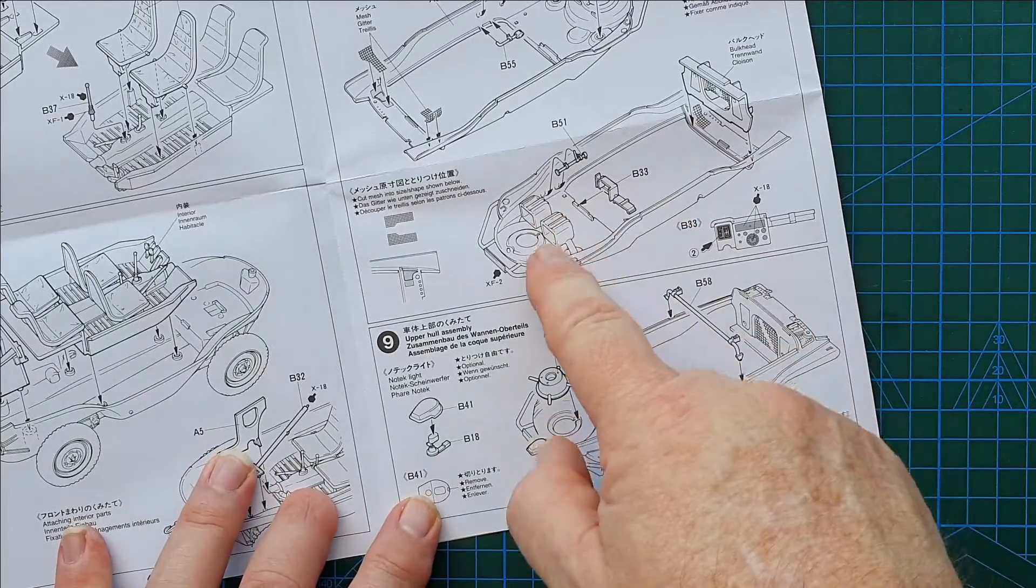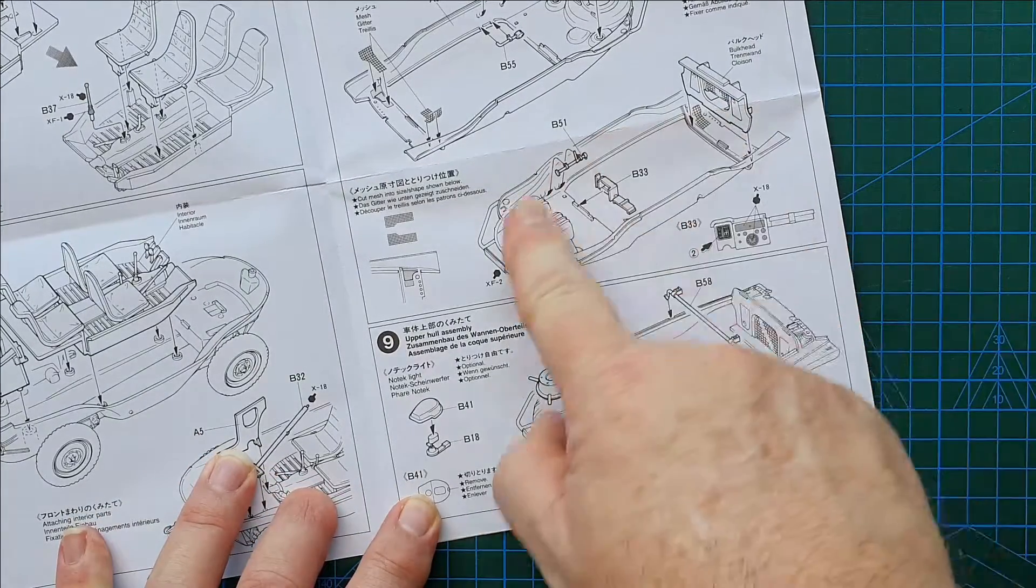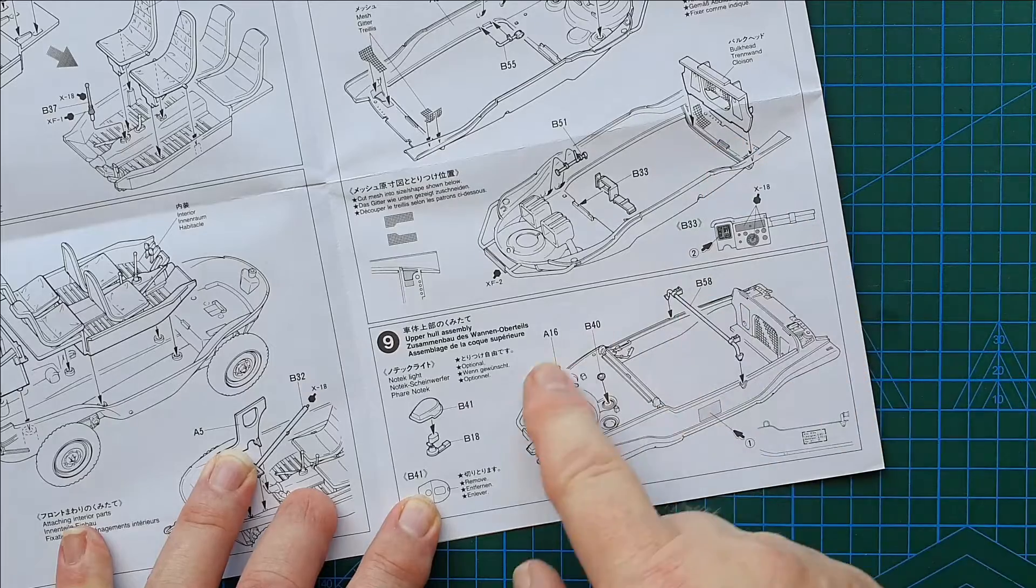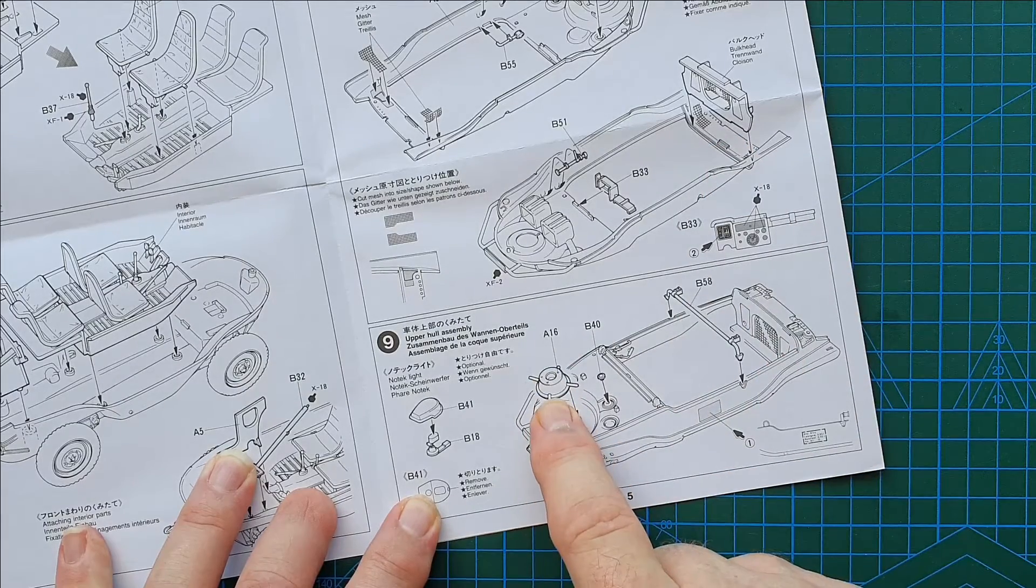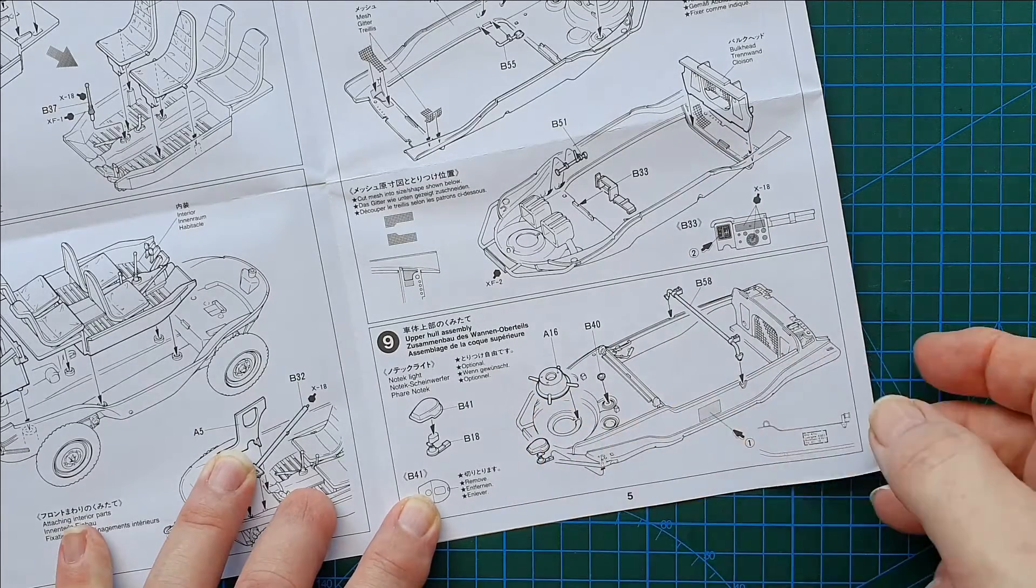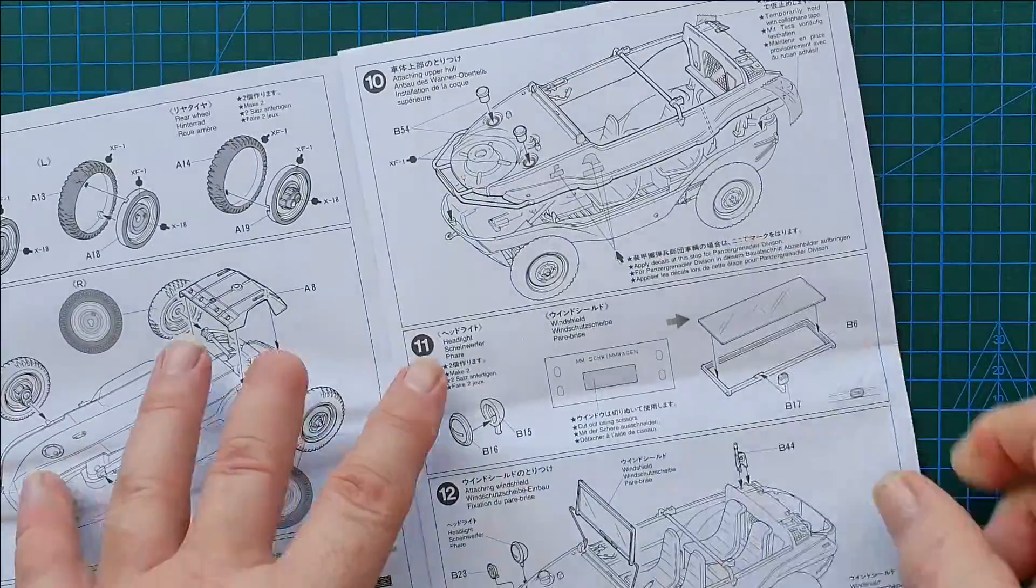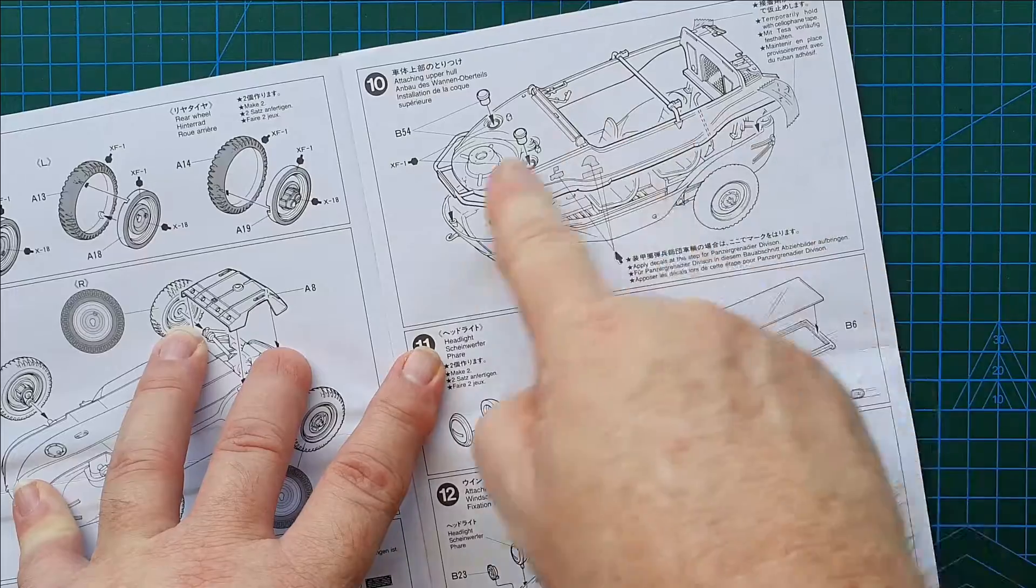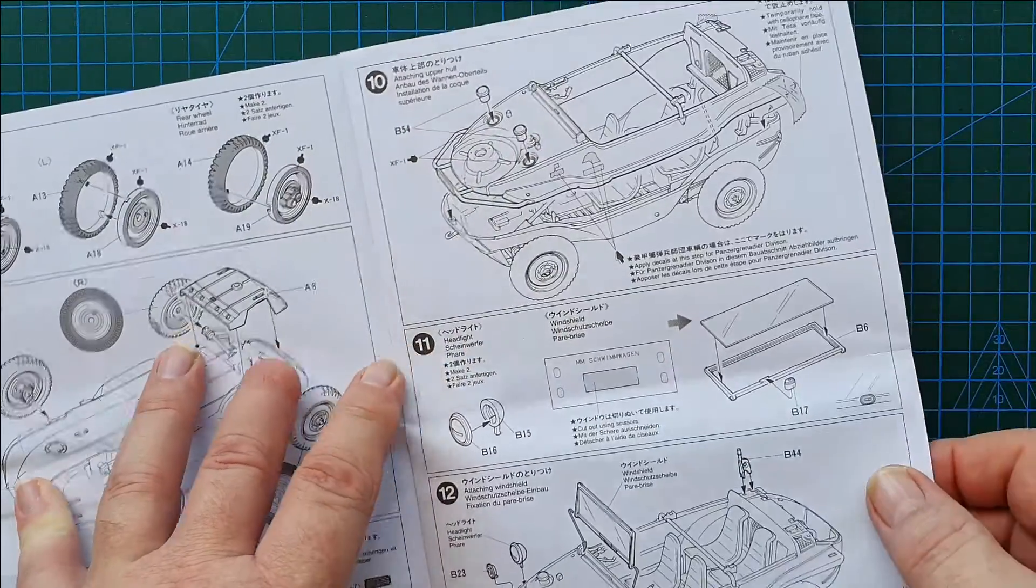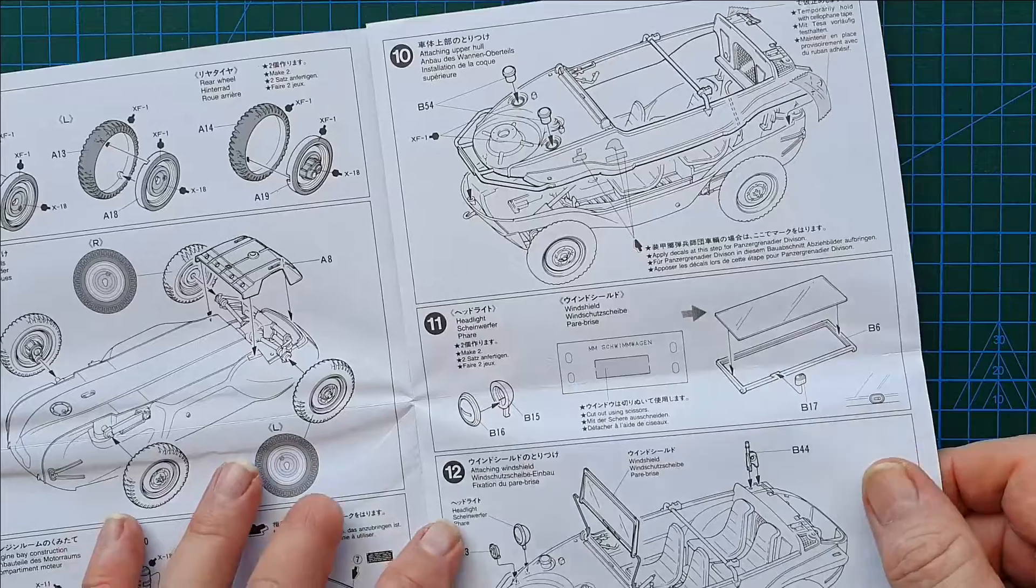So a couple more bits and pieces go on the inside of the upper body. That's for your spare wheel. That's fairly straightforward. There are decals to go on as well and then the upper body gets attached to the bottom and you're almost done. Okay, 10 steps and you're almost done.